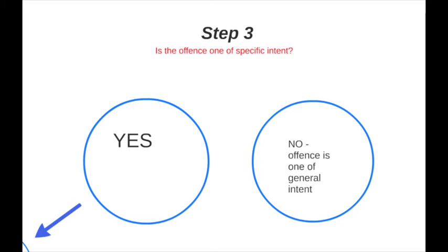Step three is where the case law gets very complex. The courts have split all offenses in the criminal code and elsewhere into two categories: specific intent offenses and general intent offenses. This is a very complex and controversial area — in my opinion, a very weak legal distinction, but it is one that has been chosen. If the offense is of general intent, we move on to step four. First we have to decide: is it specific or general intent?